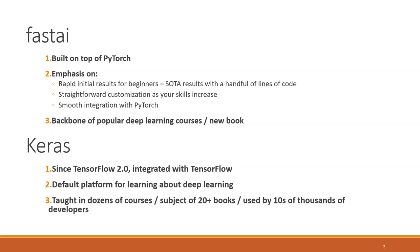FastAI is also intended to make it easy to do customizations as your skills increase by providing a layered API that goes all the way down to the underlying PyTorch framework. It's the backbone of a series of very popular deep learning courses presented by Jeremy Howard, as well as the subject of a new book that Howard and Gugger put out in 2020 called Deep Learning for Coders with FastAI and PyTorch.